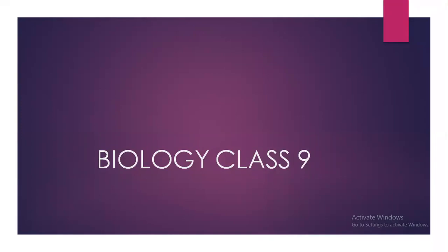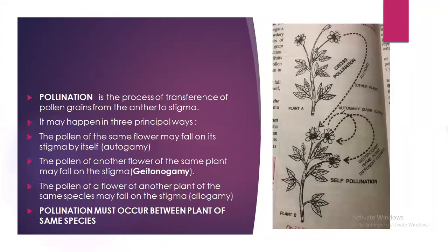The stamens of the flower are the male organs. The anthers of the stamen produce powdery material called pollen, which consists of particles called pollen grains. Each pollen grain contains nuclei that participate in reproduction. For initiating the process of formation of fruit and seed, the first step is that the pollen grains must reach the stigma. Pollination is the process of transference of pollen grains from the anther to the stigma.